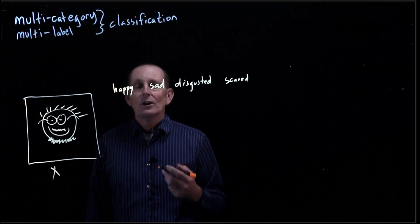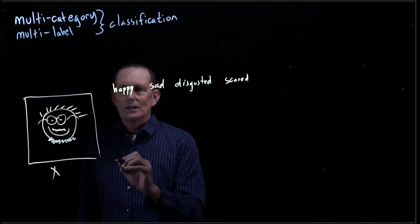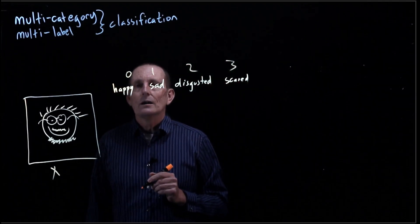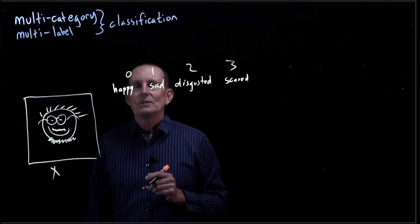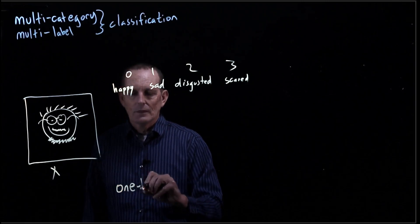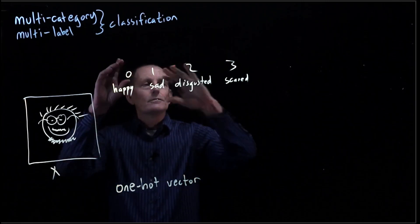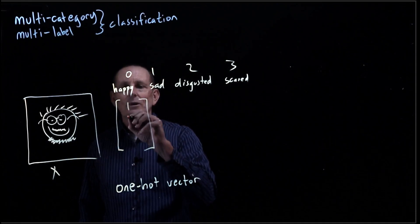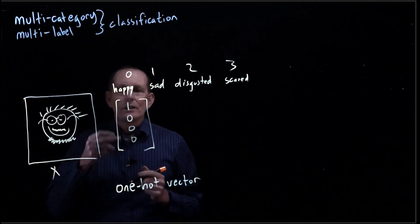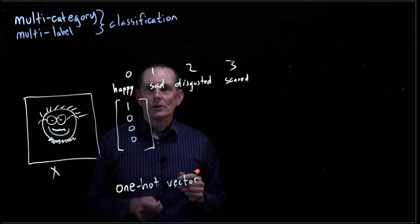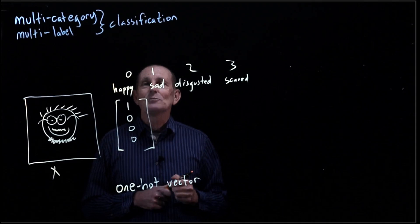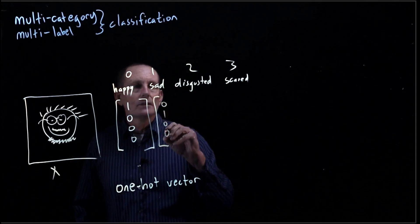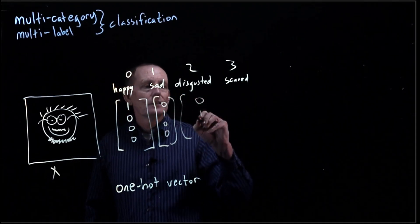We can represent this in one of two different ways. We can represent it as a single value — 0, 1, 2, or 3. Alternatively, a common representation is as a one-hot vector. With four categories, we make a vector of size 4, and if it's happy, the first element is set to 1 — that element is 'hot' and the others are 'cold'. Sad, disgusted, and scared would each have their respective element set.